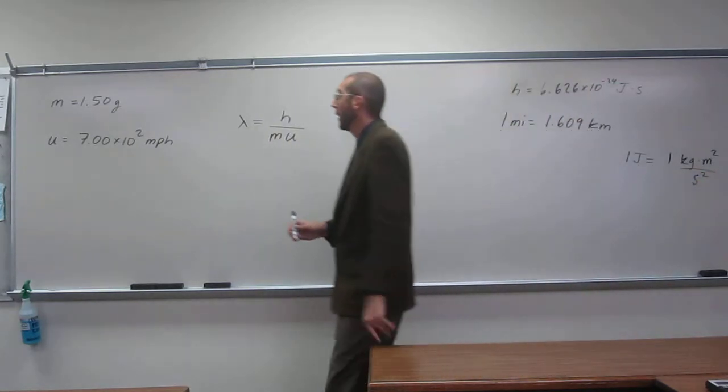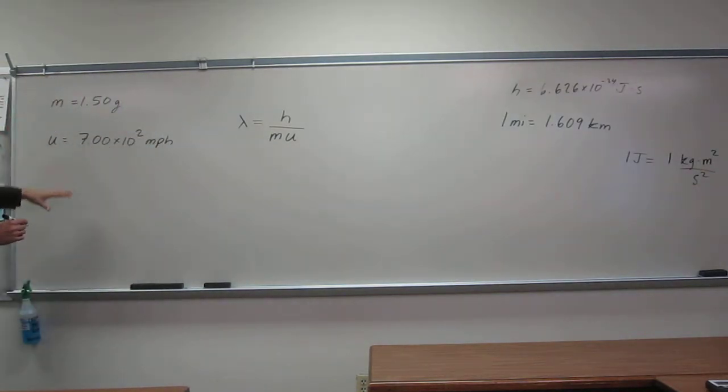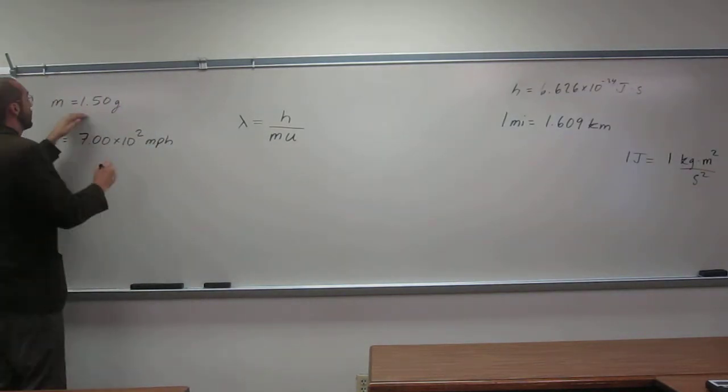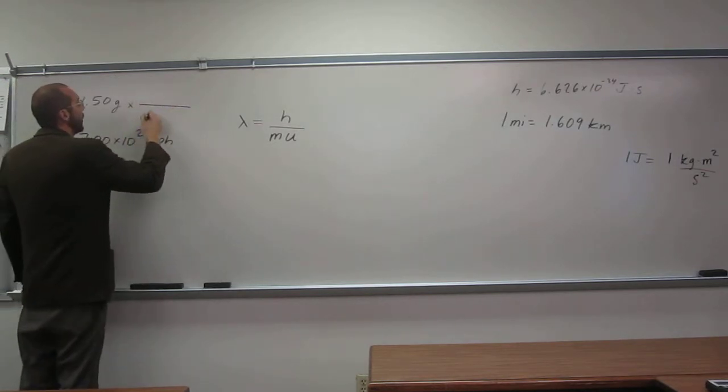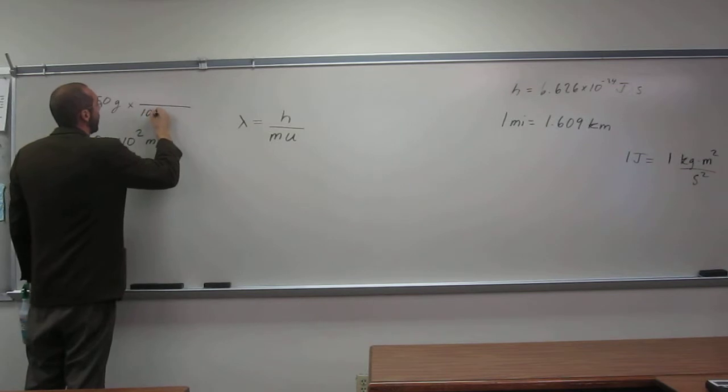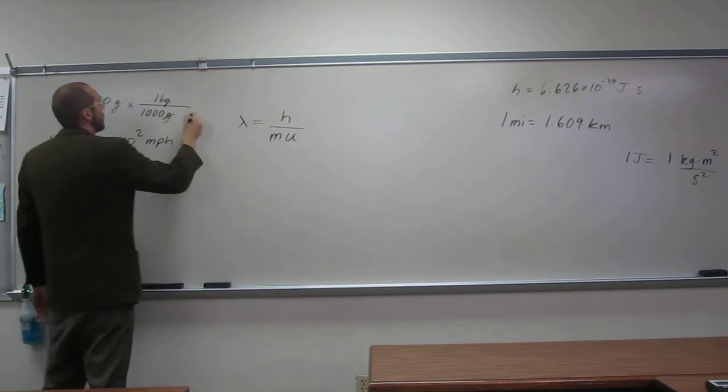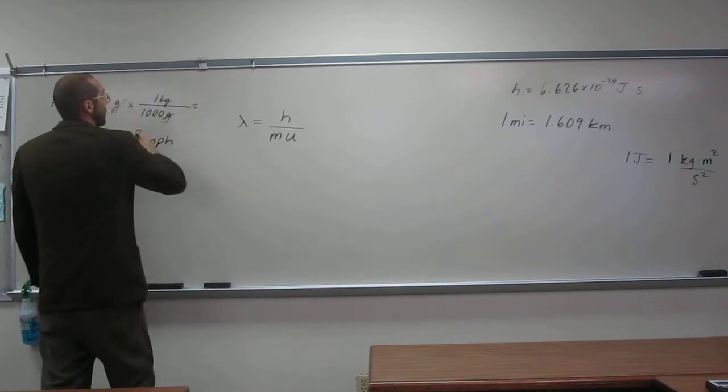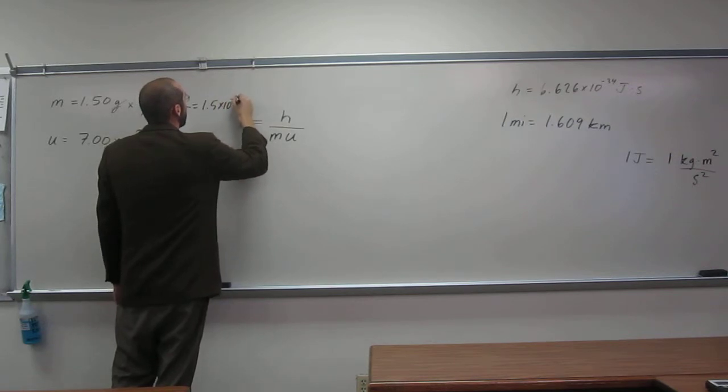So let's plug things in. Well, we've got to convert and then plug things in. The first thing I'm going to do is convert this. So 1000 grams for one kilogram gives us 1.5 times 10 to the negative 3 kilograms.